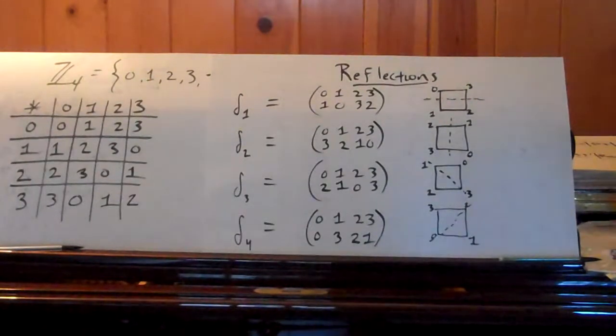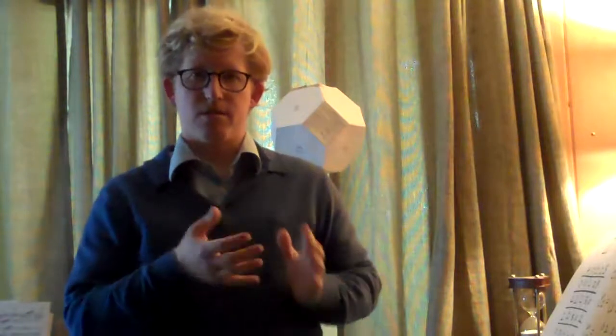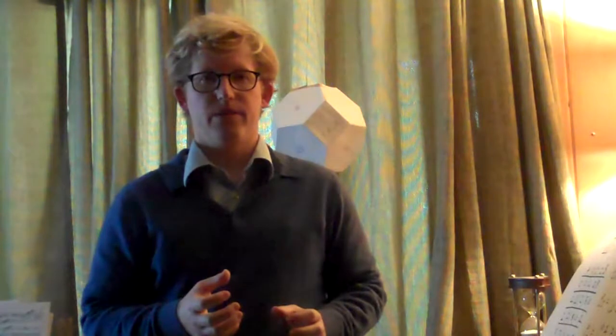Now here's an interesting thing to think about. Earlier I mentioned how if we have n elements in a set or a group, there are n factorial ways of arranging those elements. So if we have four elements, there are 24 different possible arrangements or permutations of that group.